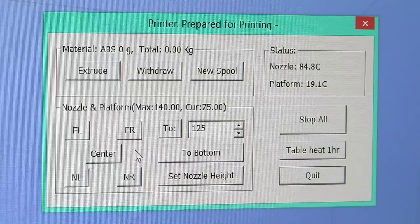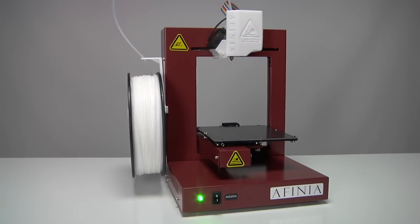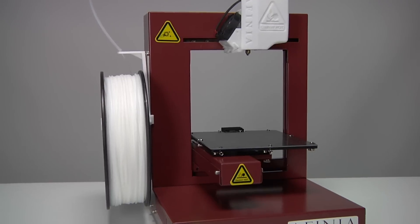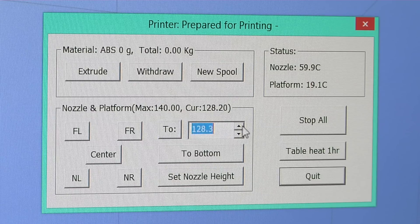Open the maintenance window, click the center button, then raise the platform to within a millimeter of the print surface. Continue to raise the platform by 0.1 millimeter until the nozzle is 0.2 millimeter from the print surface.